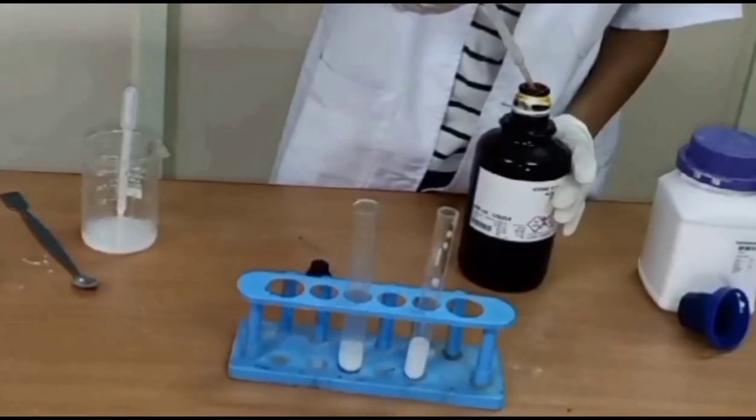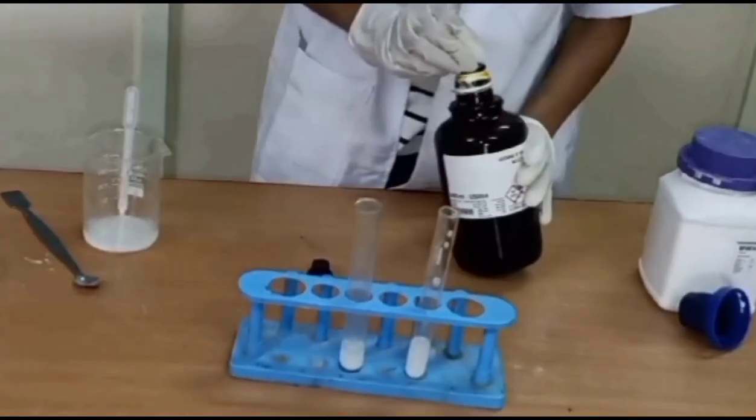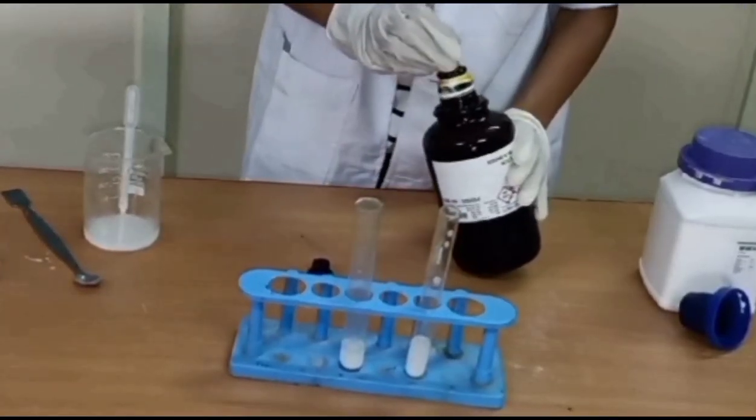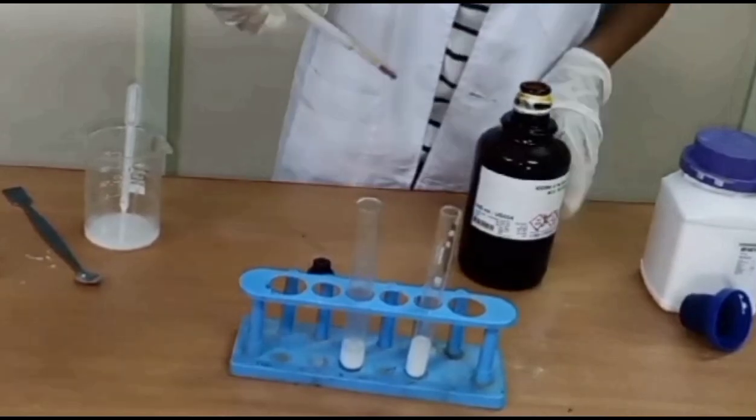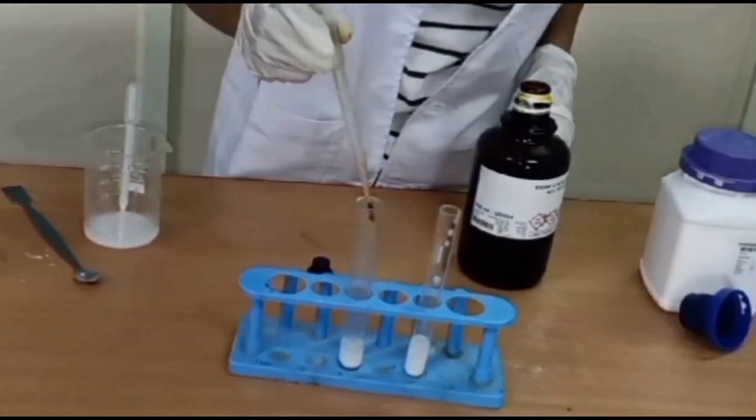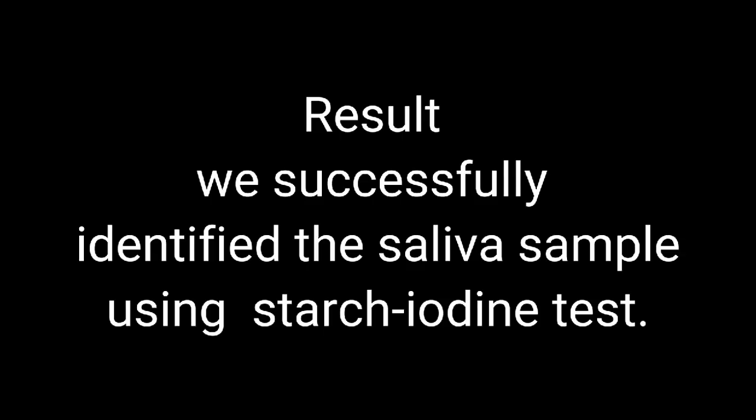Add some drops of iodine solution in both test tubes. After some time, in test tube B, in which saliva was added, it decolorized and turned white color. Successfully identified the saliva sample using the starch iodine test.